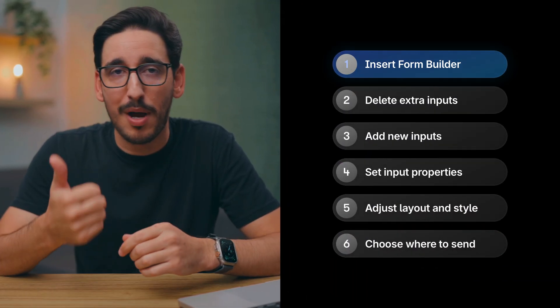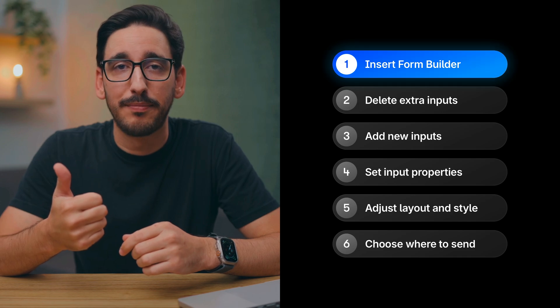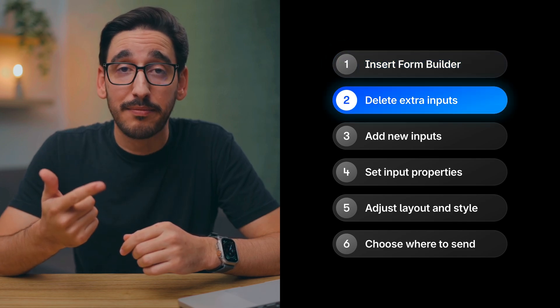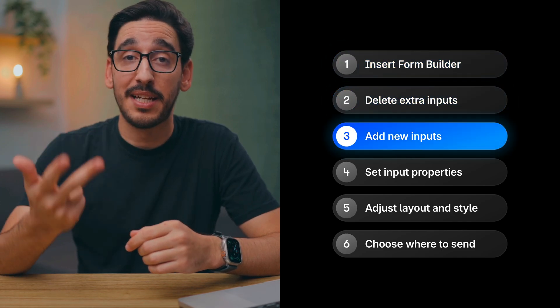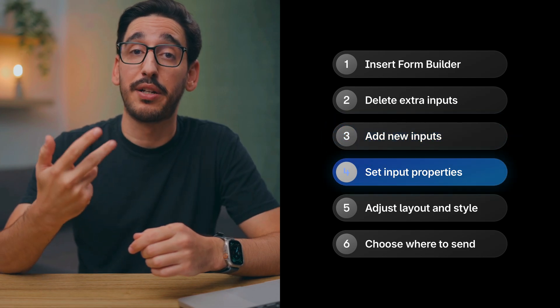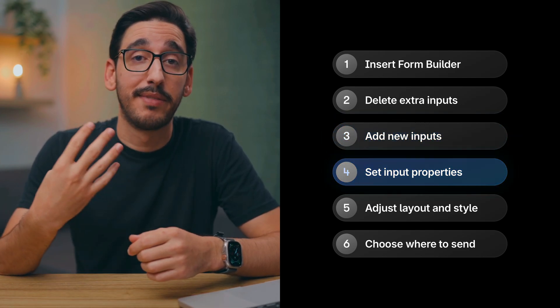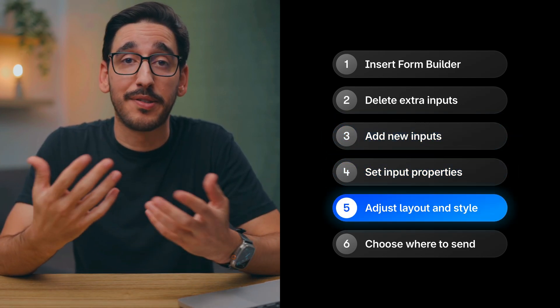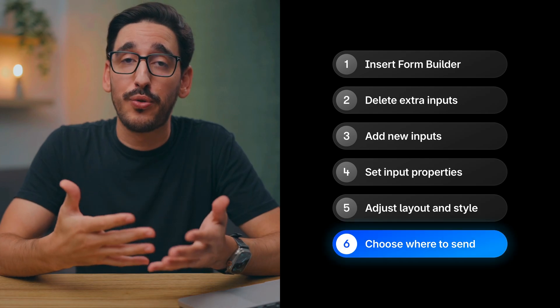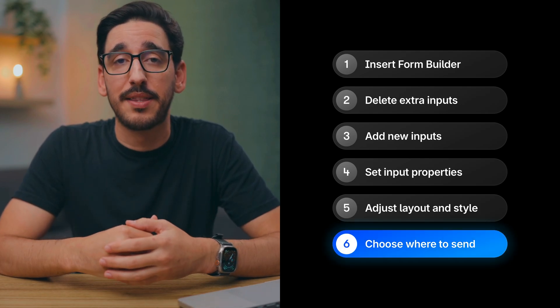Let's recap what goes into setting up a custom form: drop in the form builder, delete what you don't need, add the inputs you do need, set your field properties in the inspector, adjust the layout and styling to your liking, and choose where to send the data. That's it — now head to Framer and start creating beautiful, functional forms for your site.